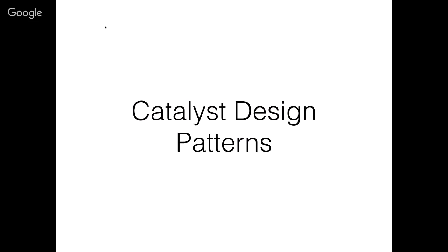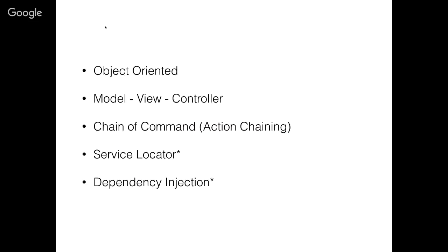The idea with the command pattern is that you want to take something relatively complicated, or a group of similar but complicated things, and put them behind a uniform interface. Usually you have an object with a method called run or execute or something like that. That's used to pull it together. In Catalyst, when I say an action, that's actually a great example of a command pattern — because behind every action there's a Catalyst action instance. So the command pattern fits very well in Catalyst.